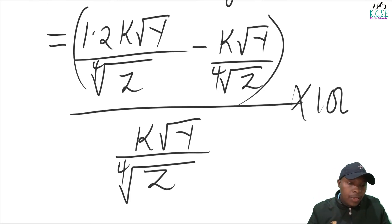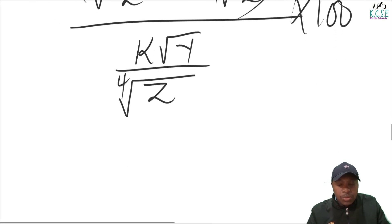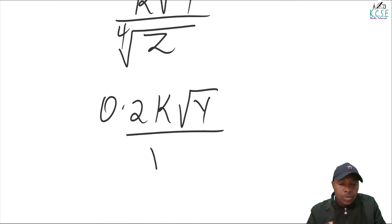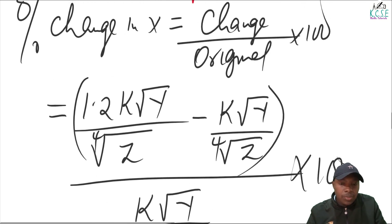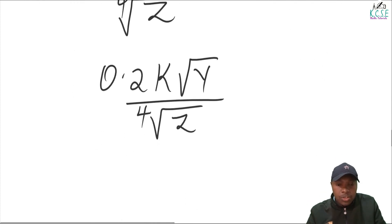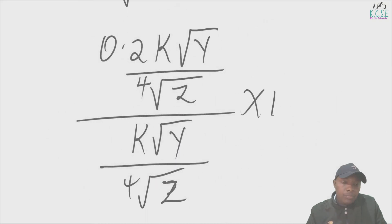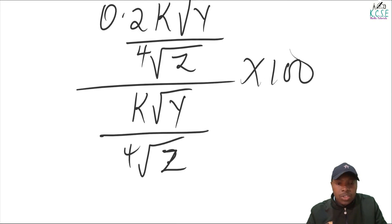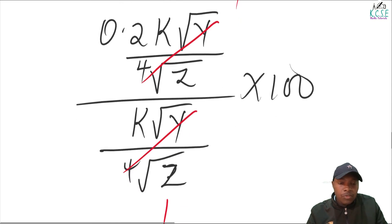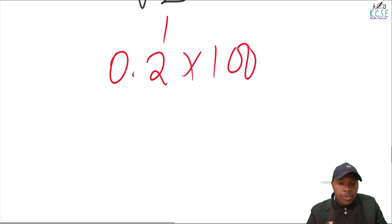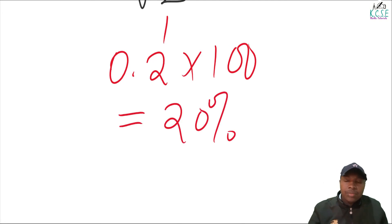Multiplying the whole expression by 100: the change is 0.2k times the square root of y divided by the fourth root of z, since 1.2 minus 1 equals 0.2. The entire expression k times square root of y over the fourth root of z cancels out, leaving 0.2 multiplied by 100, which gives 20%. This is an increase of 20%.